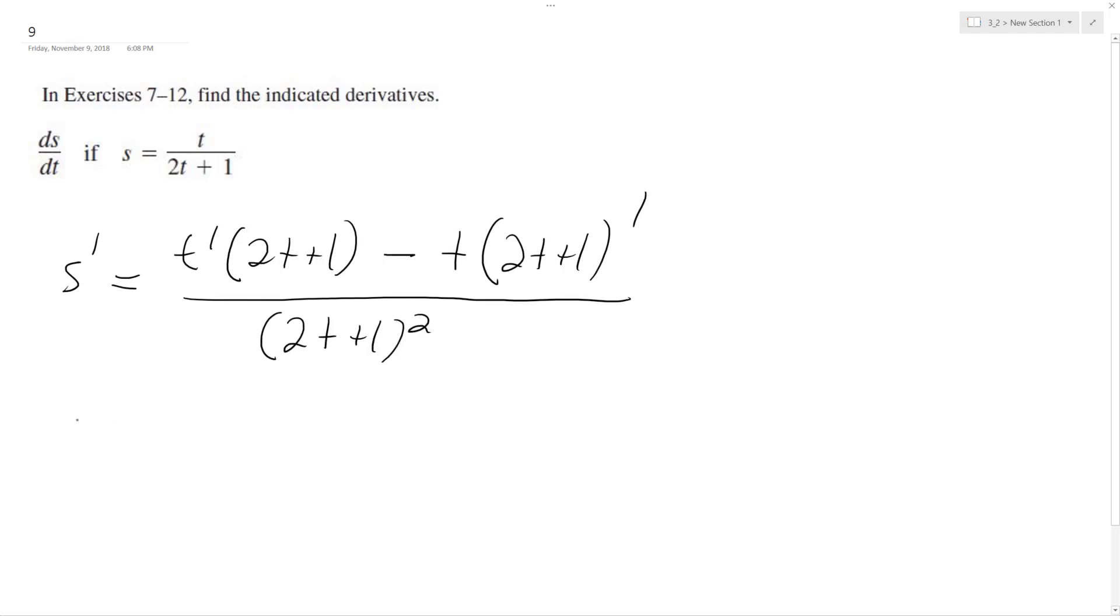So what we do here is t prime, or the derivative of t is just 1, so we have 2t plus 1 minus, and then the derivative of 2t plus 1, even if you use the chain rule, it's just 2. So we get 2t, and this ends up all being over 2t plus 1 squared.